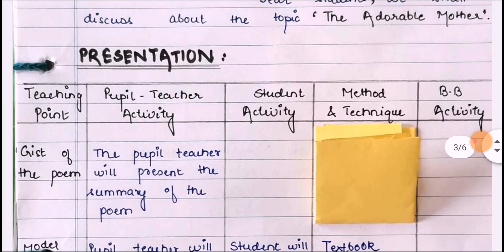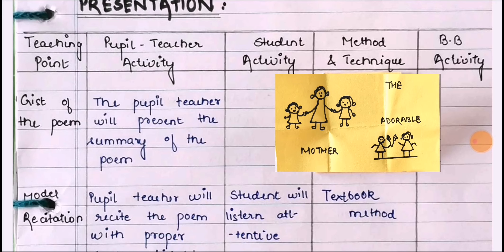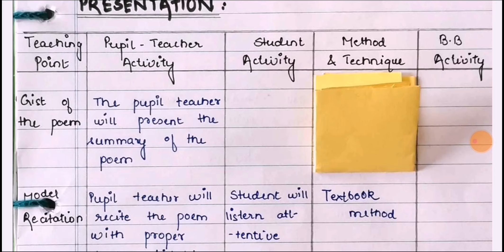Then we will start the presentation. The presentation is divided into five columns: teaching point, pupil-teacher activities, students' activities, methods and techniques, and blackboard writing activities. The first step is the gist of the poem. We shall summarize the theme or story of the poem by the use of chart, model, and activities.